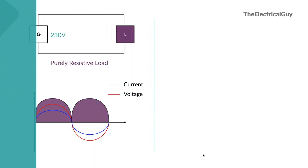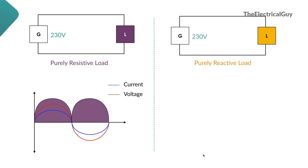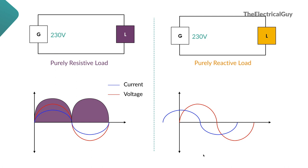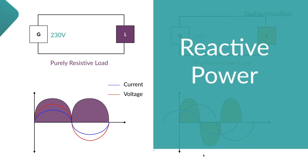Now in this circuit we have replaced the resistance with a purely reactive load. Looking at the voltage and current waveform, the current has a head start — voltage and current are out of phase. At one instant, voltage and current are both positive, giving positive power. At another instant, voltage is positive but current is negative, so positive multiplied by negative gives a negative result. So as you can see, the power is both positive and negative, and such power is what we call reactive power.